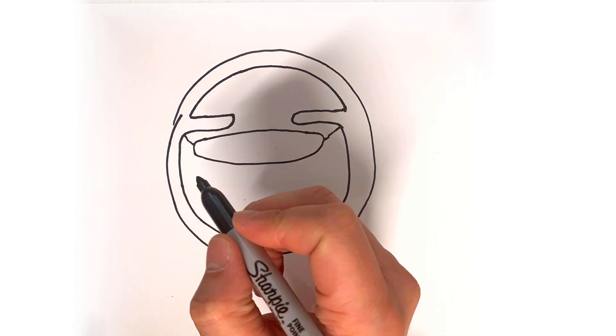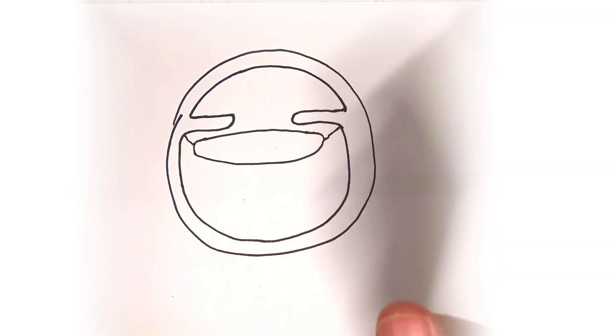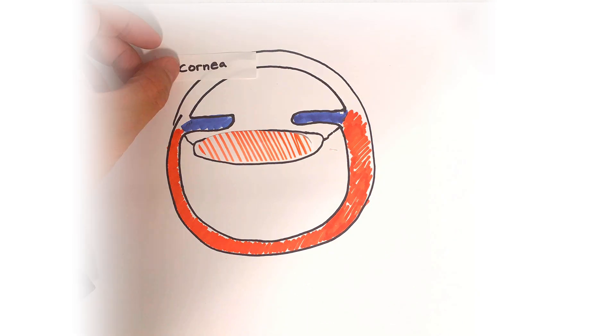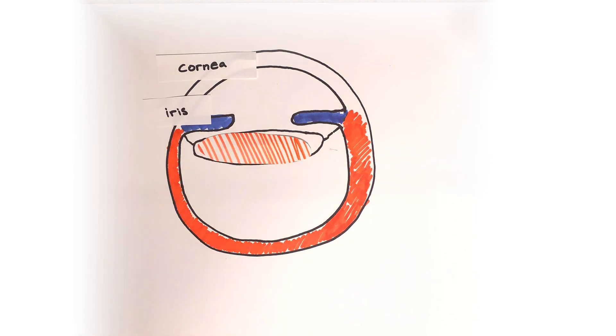Let's color code it. Here the front of the eye or the cornea will put on the top, the iris here, and the cataract is the lens in the center of the eye suspended by ligaments called zonules.